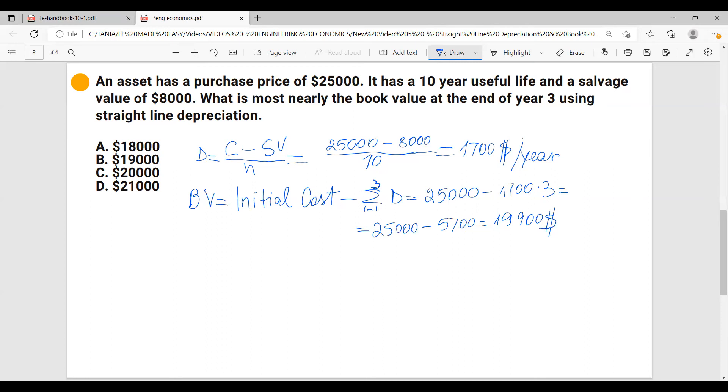Looking at the results, this is almost $20,000. So make sure you choose the correct answer. The correct answer is C, $20,000.